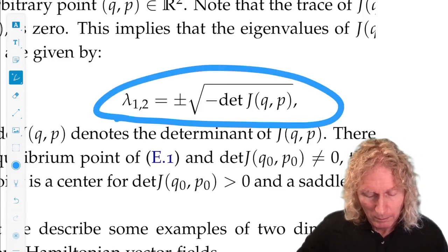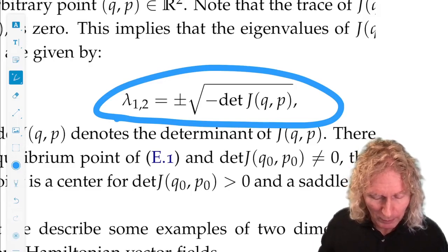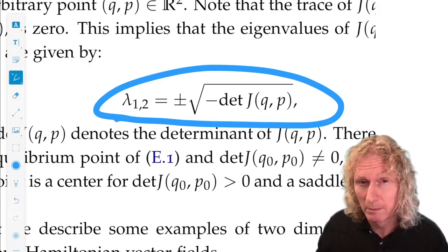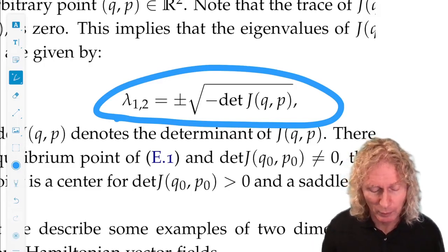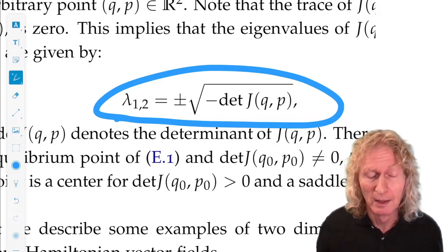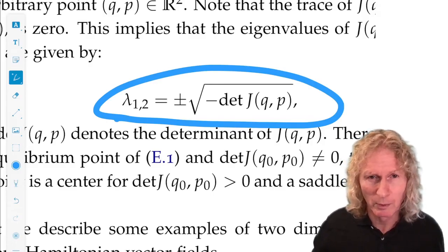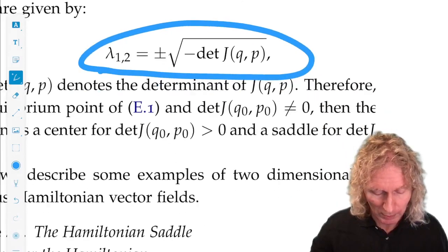So if the Jacobian is positive, we have a center. If we evaluate this at a fixed point, if it's negative, we have a saddle. If it's zero, we have a double zero, it's degenerate in some sense.